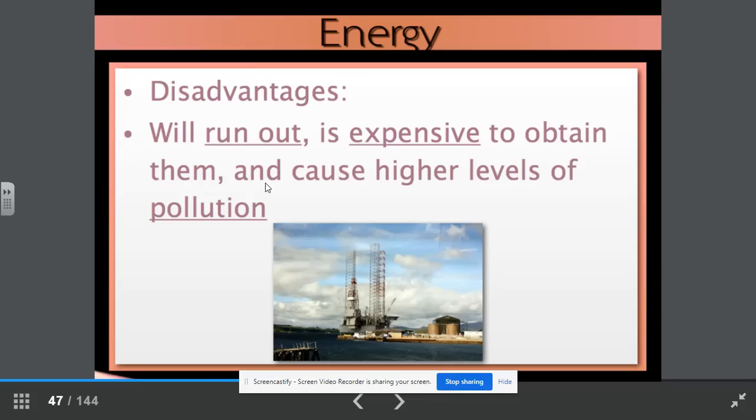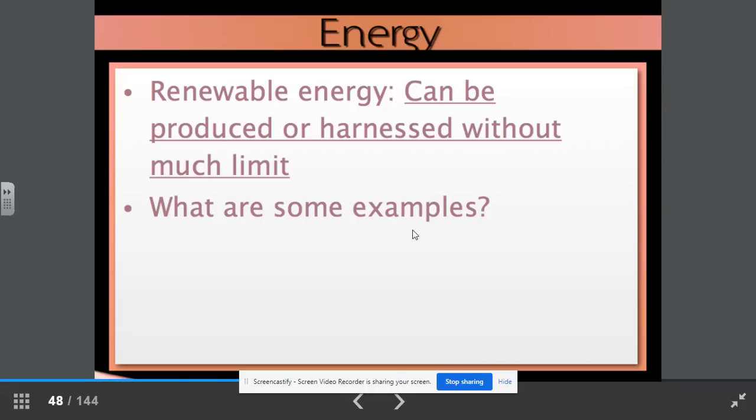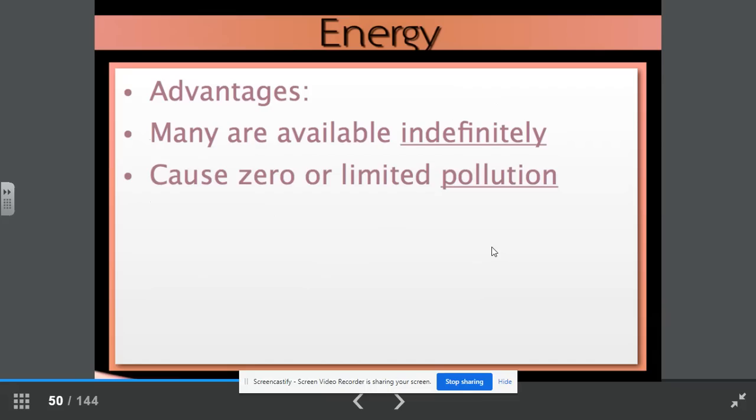Renewable energy can be produced or harnessed without much limit. What are some examples? Wind, solar, biomass, geothermal, hydropower. Advantages. Many of these are available indefinitely. We're not going to run out of them. They cause zero or limited pollution.